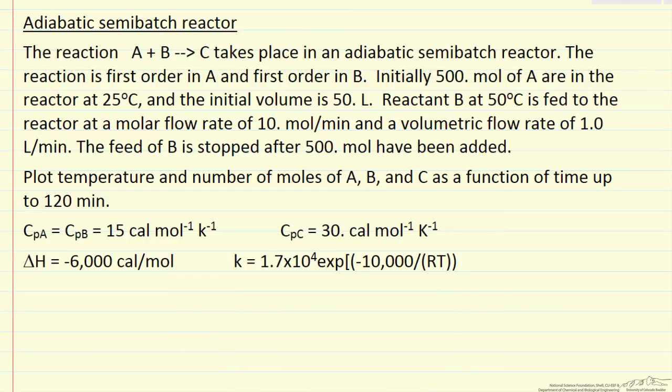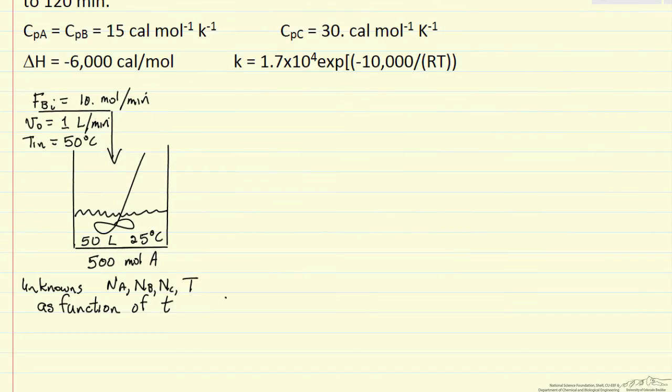The first thing I want to do with this problem, and with most reactor design problems, is draw a diagram of the system and label what we know. I've drawn a representation showing the initial conditions in the reactor, the feed conditions. Keep in mind we only feed this for 50 minutes, and then we stop the flow into the reactor. The unknowns are the number of moles of A, B, C, and the temperature in the reactor, all as a function of time.